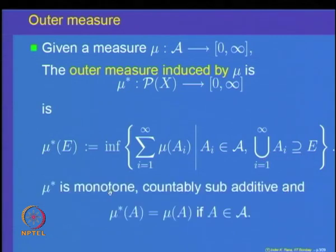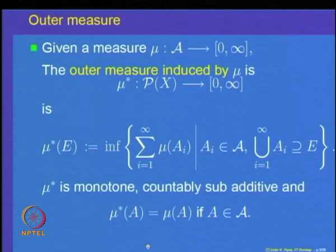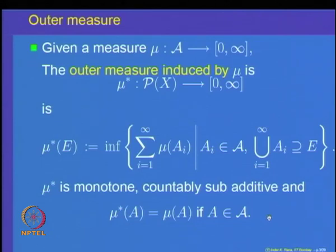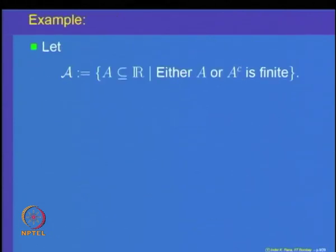We proved properties of this set function, the outer measure. Namely, mu* is monotone, it is countably sub-additive, and on the sets in the algebra, mu* is the same as mu. So mu* extends the measure mu, but it is only monotone and countably sub-additive. Let us look at an example of this outer measure.